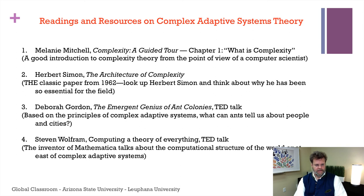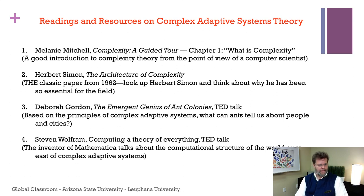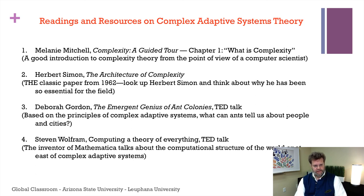You have seven readings and resources, none of them too long, all extremely interesting. The first is the first chapter of Melanie Mitchell's book 'Complexity: A Guided Tour,' which poses the question: what is complexity? Keep in mind that Mitchell is a computer scientist. The second reading is arguably the classical starting point for any investigation of complexity — a 1962 paper by Nobel laureate Herbert Simon called 'The Architecture of Complexity,' foundational across economics, biology, and complexity theory. It's a brilliant paper.